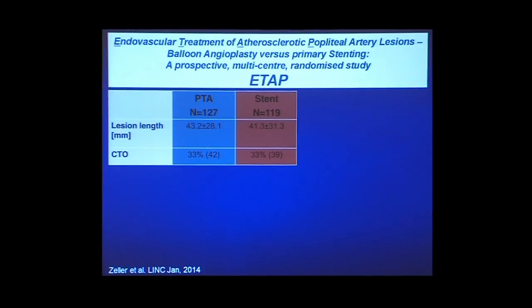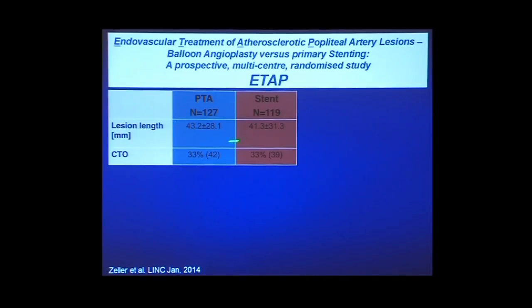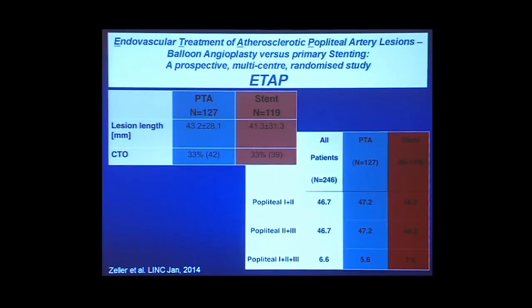The ETAP study, recently presented but not yet published, is a trial of popliteal artery lesions comparing PTA versus Lifestent. The lesion length is shorter than SFA, in the range of 4 centimeters, and about a third of the lesions were occlusions. Patients had different combinations of P1, P2, and P3 lesions, and a small number had lesions involving the entire popliteal — segments 1, 2, and 3.